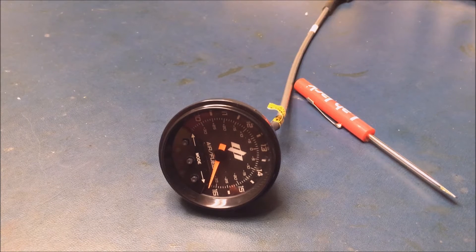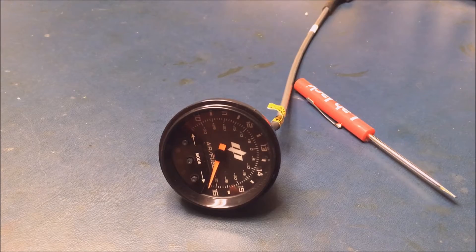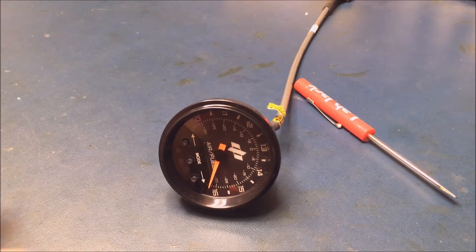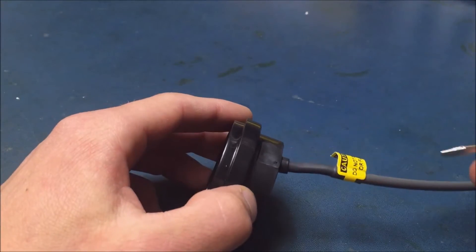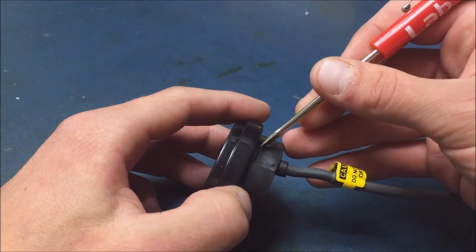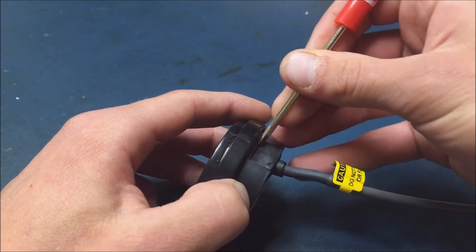In order to do this, the grommet holding the cable in needs to be flipped 180 degrees. First, use a small screwdriver to peel back the grommet and get it away from the gauge body.